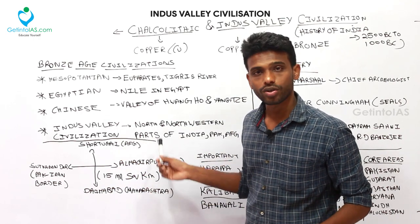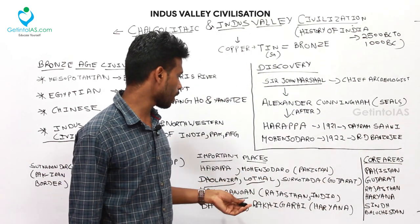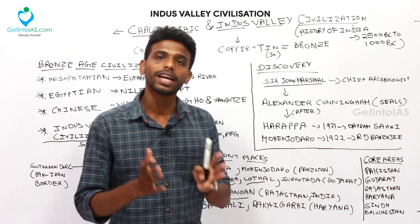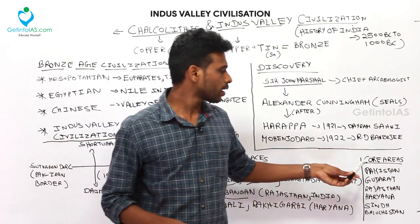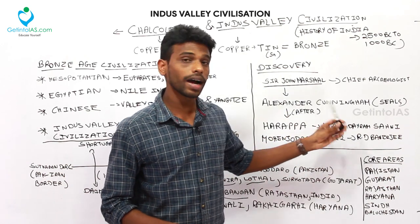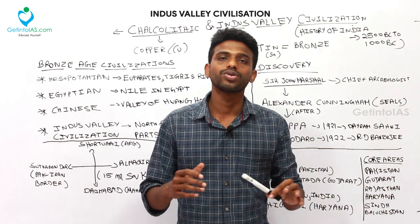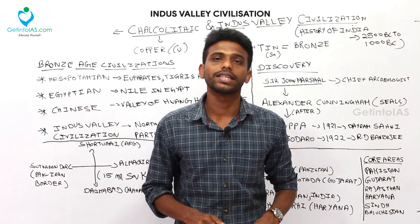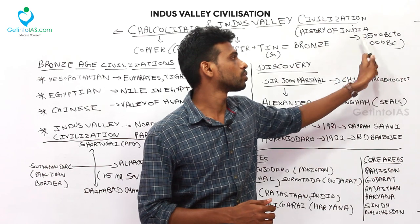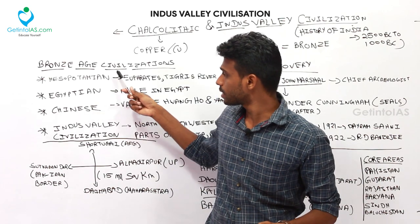The important places of the Harappan Civilization are Harappa, Mohenjo-daro, Dholavira, Lothal, and Kalibangan. After partition, some sites remained in India while remaining ones went to Pakistan. Core areas are Pakistan, Gujarat, Rajasthan, Haryana, Sindh, and Balochistan. Harappa was discovered by Daya Ram Sahni and Mohenjo-daro by R.D. Banerji. Based on seals found, archaeologists concluded that history dates back to 2500–2000 BC, establishing it as one of the Bronze Age civilizations.